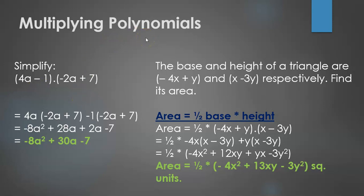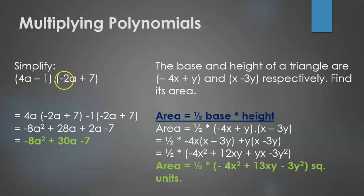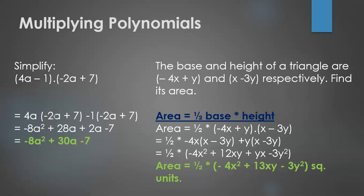Now let's look at how to multiply polynomials. We have the example: 4a minus 1 times minus 2a plus 7. We take each term of the first expression and multiply it with each term of the second. 4a times minus 2a gives minus 8a squared; 4a times 7 gives plus 28a; minus 1 times minus 2a gives plus 2a; minus 1 times 7 gives minus 7. The answer is minus 8a squared plus 30a minus 7.